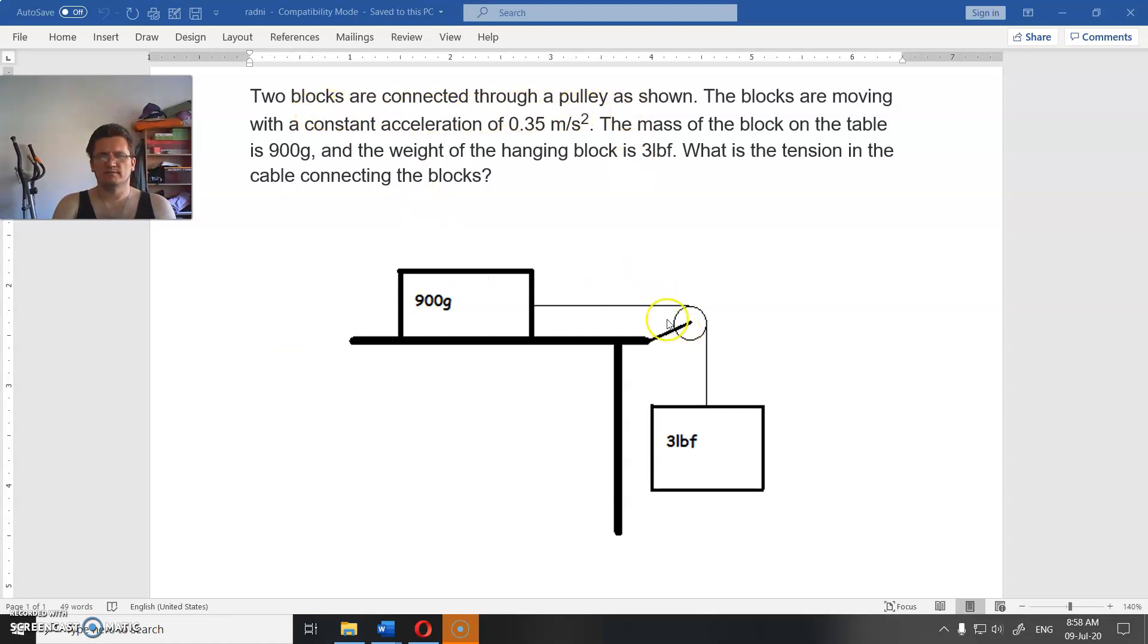Two blocks are connected through a pulley, so this is the pulley. The blocks are moving with a constant acceleration of 0.35 meters per second squared. That's nice, we have acceleration.